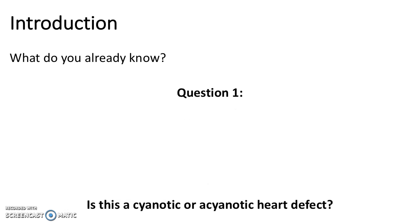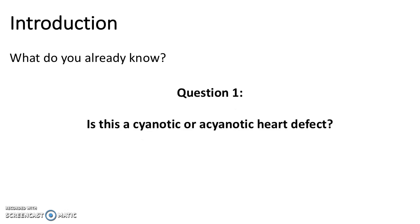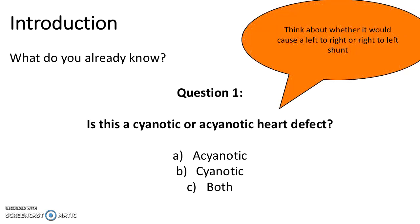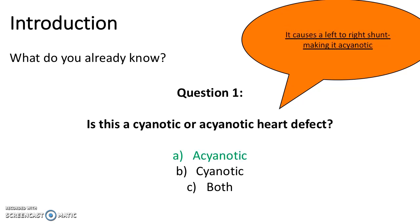Question 1. Is this a cyanotic or an acyanotic heart defect? A. Acyanotic, B. Cyanotic, or C. Both? Remember to think about whether it would cause a left-to-right or a right-to-left shunt. The answer is A. Acyanotic. That is because it causes a left-to-right shunt.